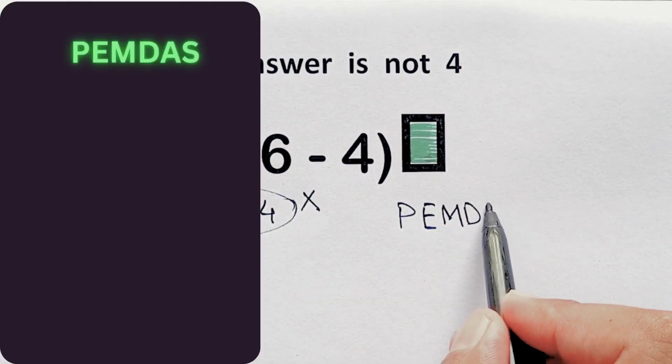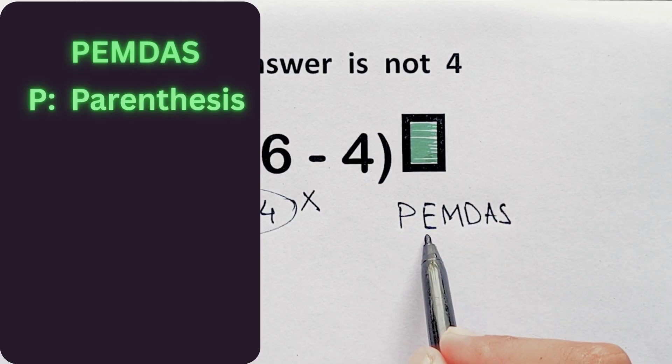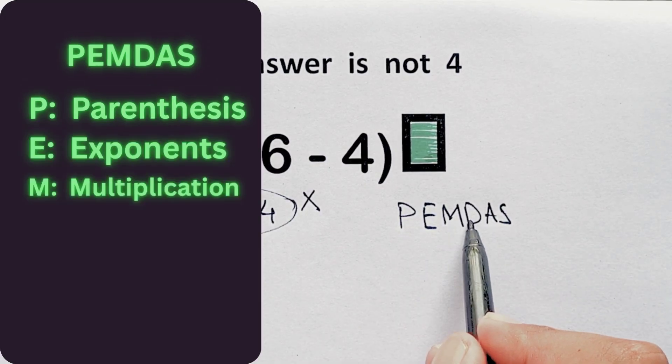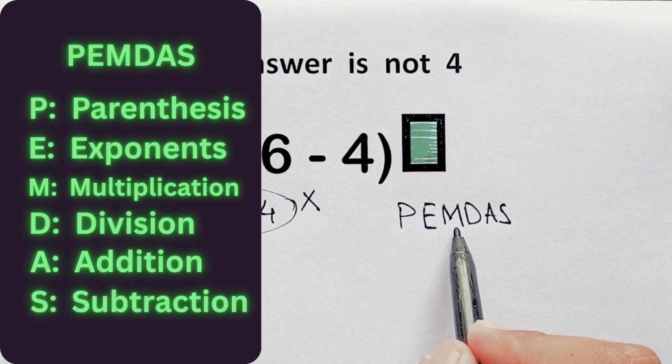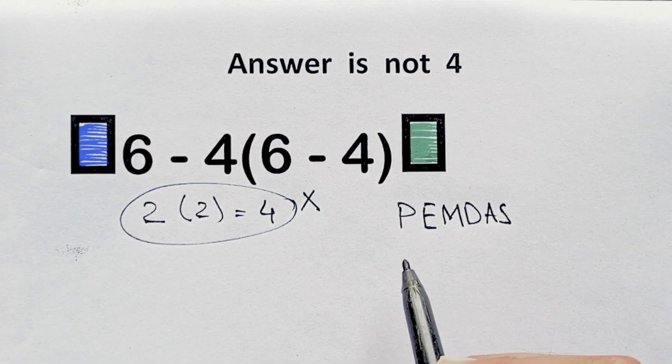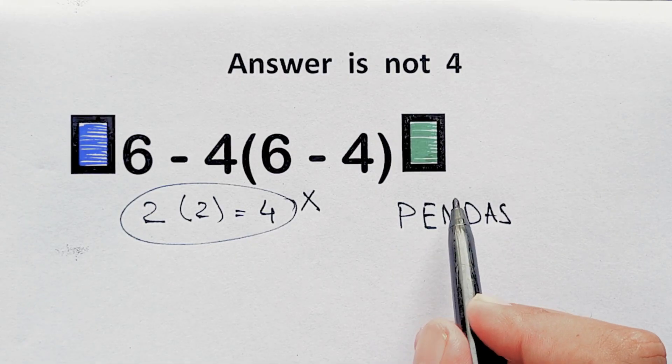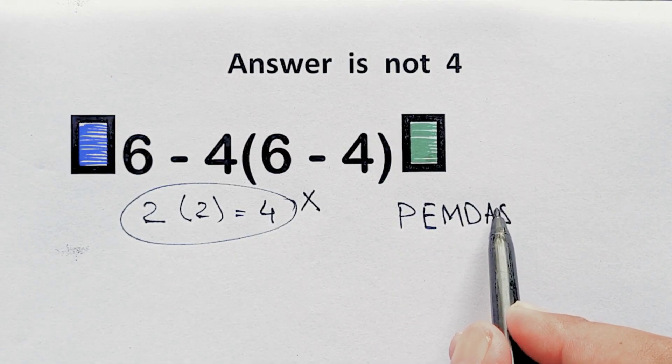which is PEMDAS, here P stands for parenthesis, E stands for exponents, M and D stands for multiplication and division, A and S stands for addition and subtraction. First we do parenthesis, then exponents, then multiplication and division, and finally addition and subtraction.